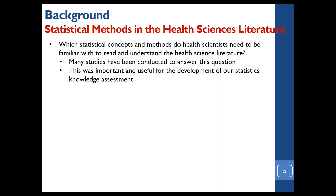If we want to know if faculty are able to read and understand the literature, we really need to know what information is being included in it — specifically, what kinds of statistical concepts and methods are being used and reported. An early motivation for this work was a publication appearing about 30 years ago, in 1988 in Statistics and Medicine. The article was titled 'What Do Doctors Know About Statistics?' Danish physicians were assessed on their knowledge of fundamental statistical concepts and methods, and those study results found that physicians had a low level of knowledge and were not adequately prepared to read and understand the literature.